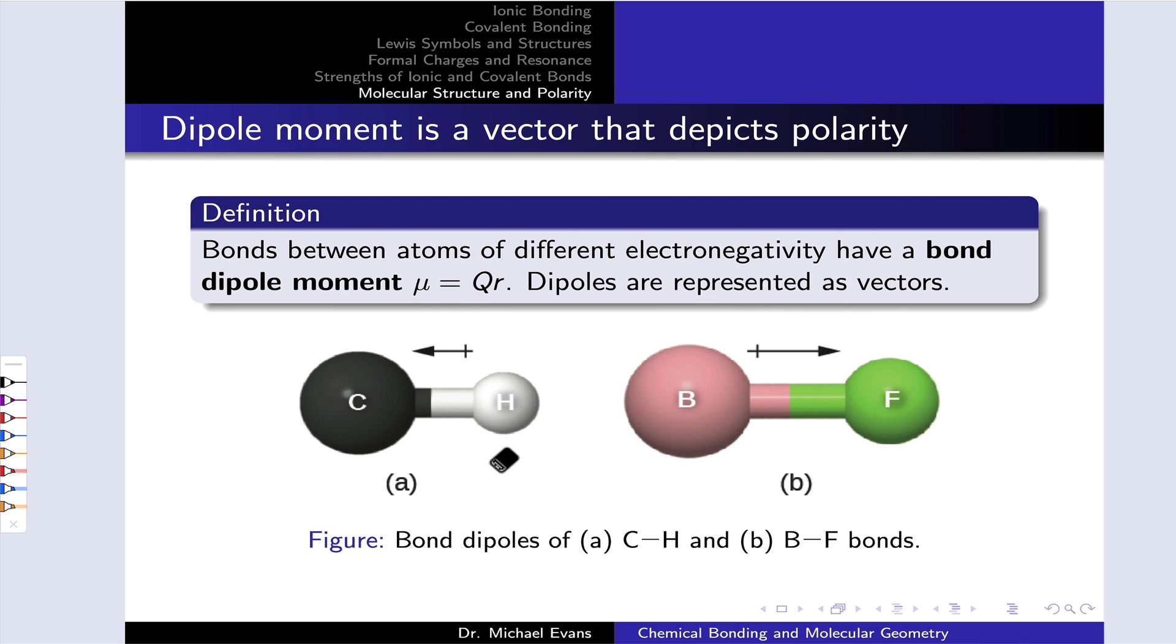The magnitude of the dipole moment is equal to the product of the magnitude of the separated charges, which we represent here as capital Q, and the separation distance between them, little r. Now we typically don't use this equation to calculate the magnitudes of dipoles in any given situation. We let a computer do that for us if we need to do a calculation.